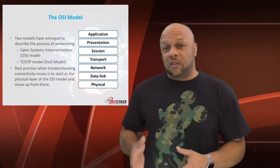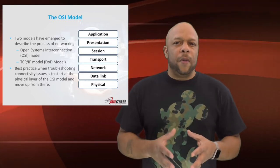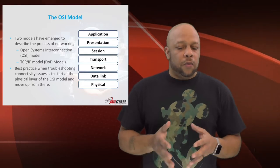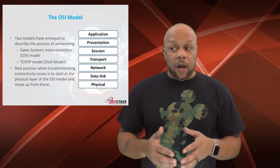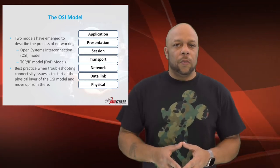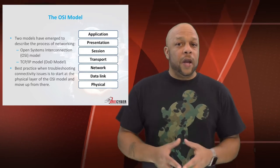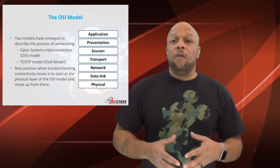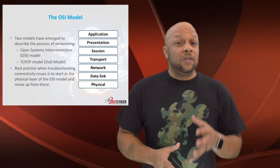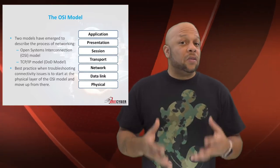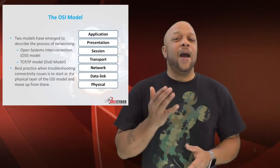You will need to memorize the seven layers of the OSI model. Just remember this: Please Do Not Throw Sausage Pizza Away. Starting with layer 1 — physical. Layer 2 — data link. Layer 3 — network. Layer 4 — transport. Layer 5 — session. Layer 6 — presentation. And layer 7 — application.